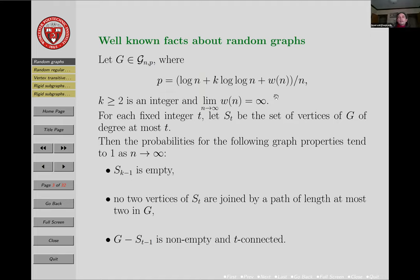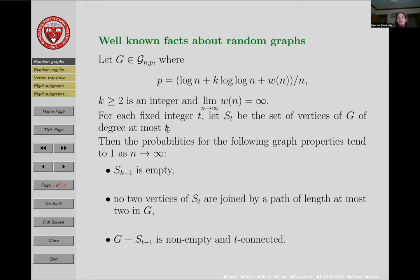Don't overlook that 'divided by n.' As the number of vertices goes to infinity, we want to say something. It's important that there is a function W(n) that goes to infinity divided by n. So if you have log(n) times k times log log(n), where k is an integer greater than or equal to 2, and the limit as n tends to infinity of W(n) goes to infinity, then you can actually say something. Given any fixed integer t, let S_t denote the set of vertices of G of degree at most t—you take your random graph G out of this probability space and fix your integer t.